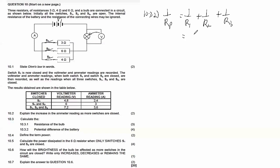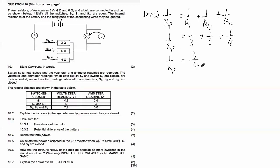Using the parallel resistance formula: 1/Rp = 1/3 + 1/6 + 1/4. Calculating gives 1/Rp = 3/4. Remember, we need Rp not 1/Rp — so flip it: Rp = 4/3 = 1.33Ω. Many students make the mistake of leaving the answer as 3/4 instead of inverting it to get Rp.